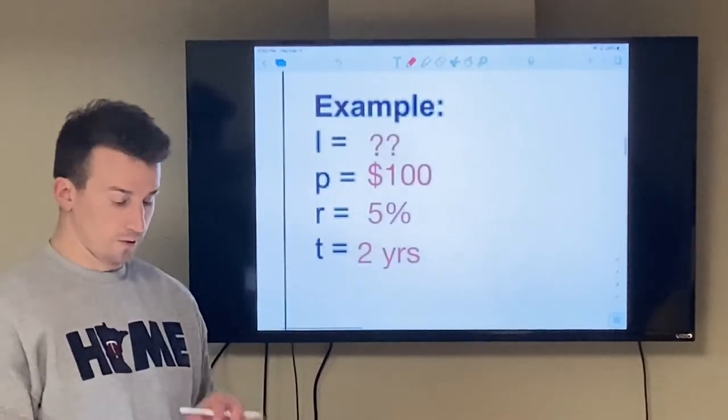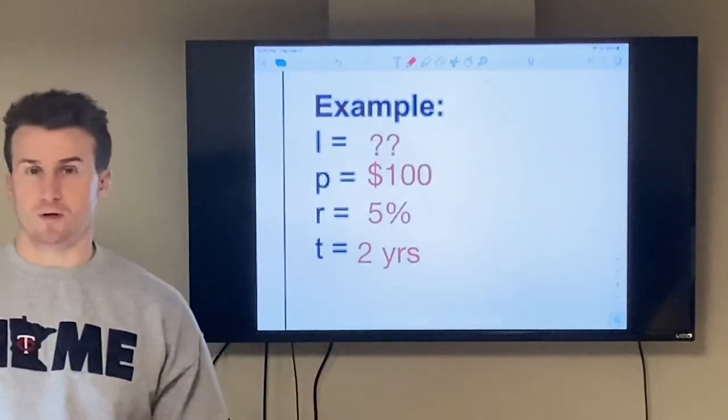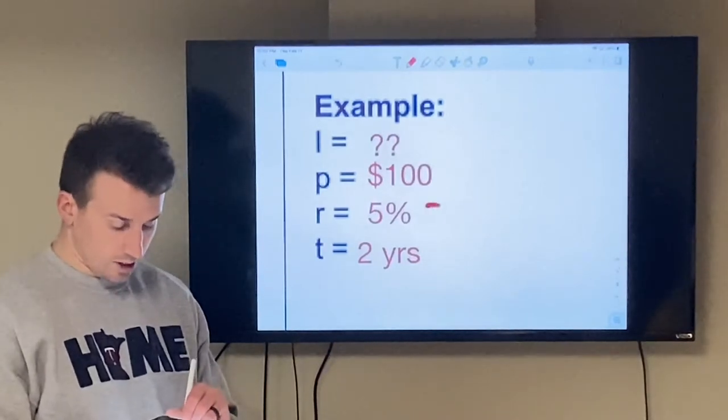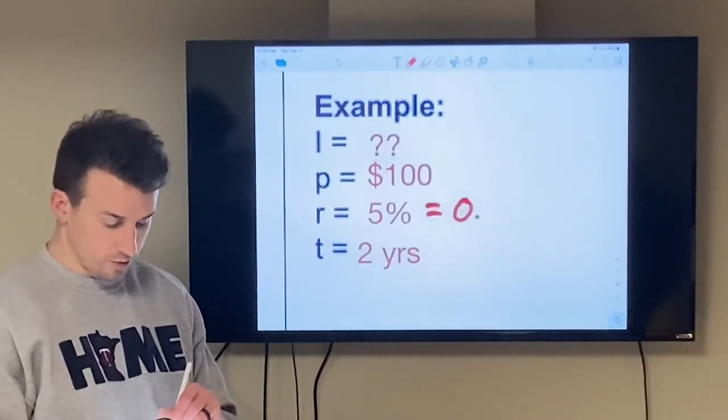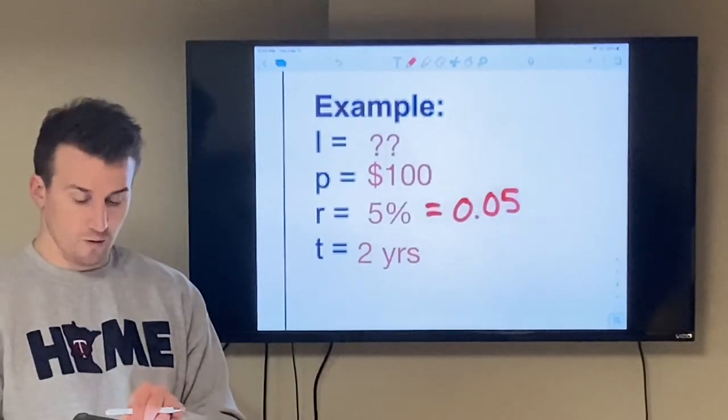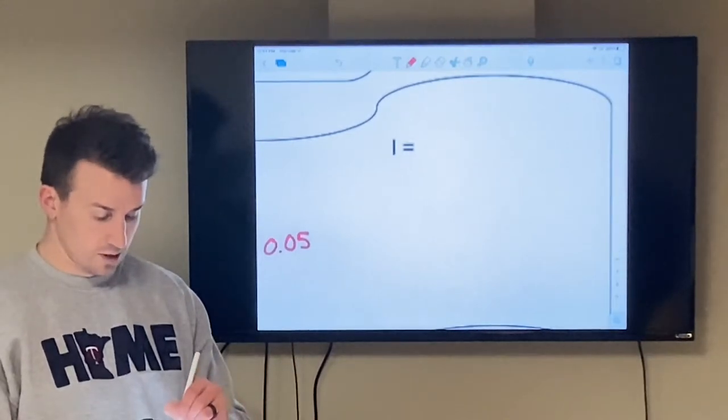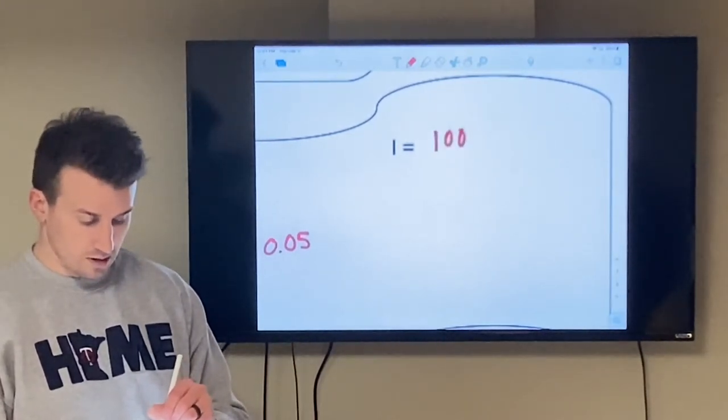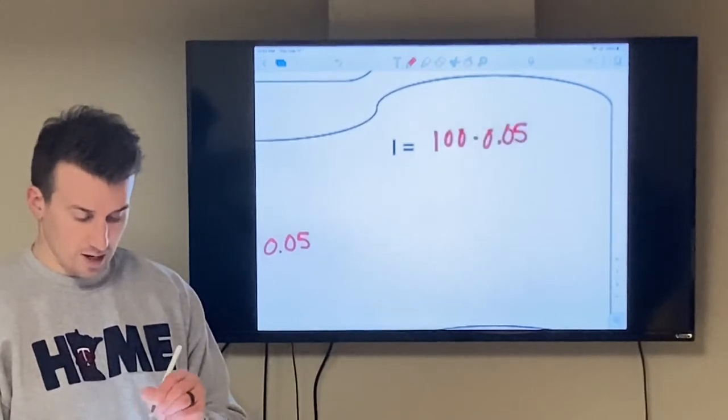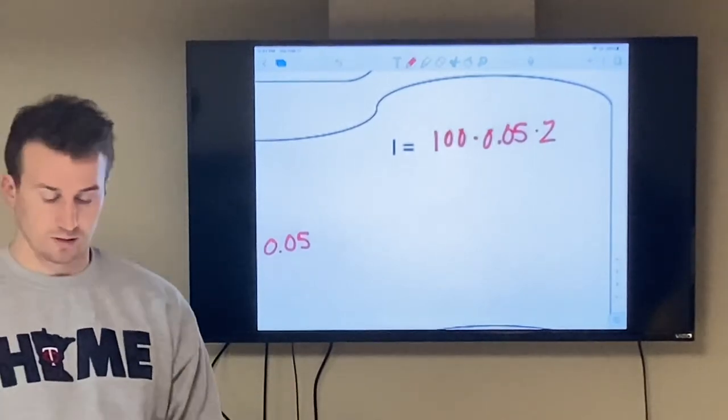So if we look at this first example, I'm trying to find the interest. I know the principal amount is a hundred dollars. I have a rate of five percent, which I need to convert as a decimal, which would be 0.05. And then I have a time, which is two years. So if I go over here and I write this as I equals 100 times my rate of 0.05 times two, I can now use that to find my interest.